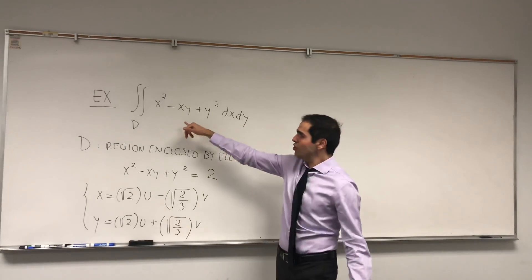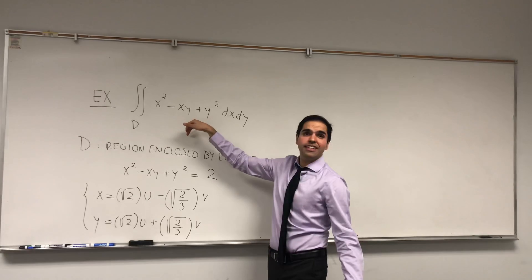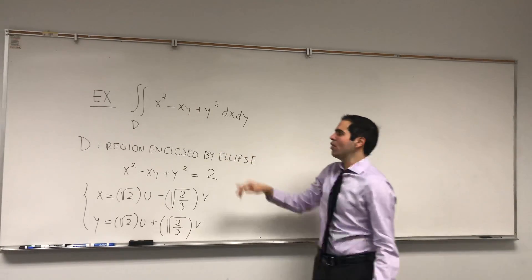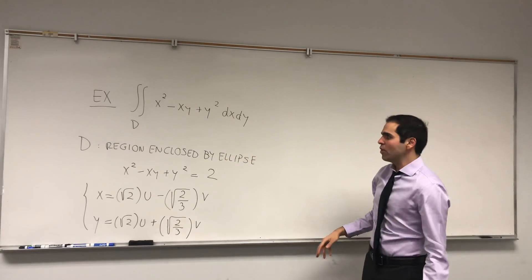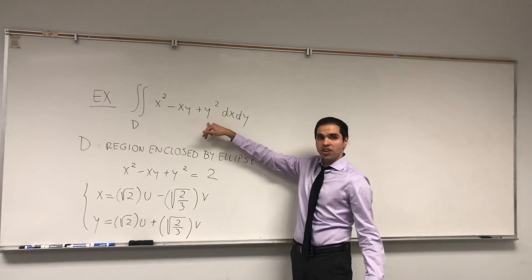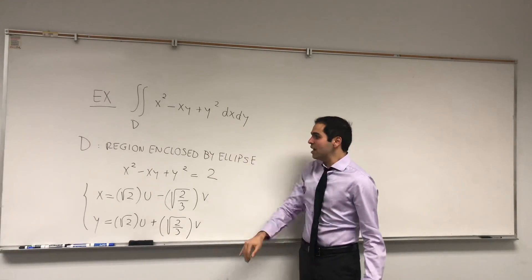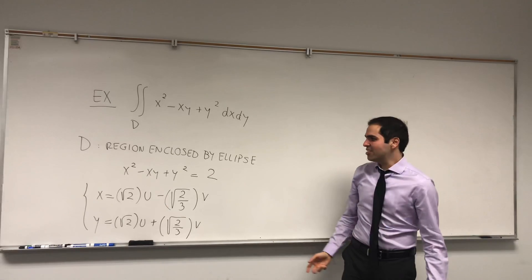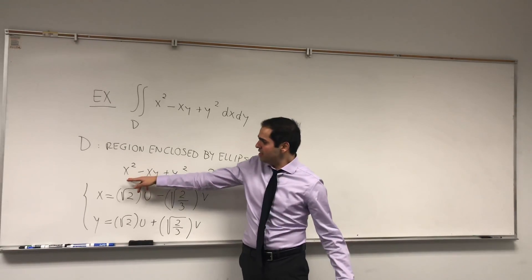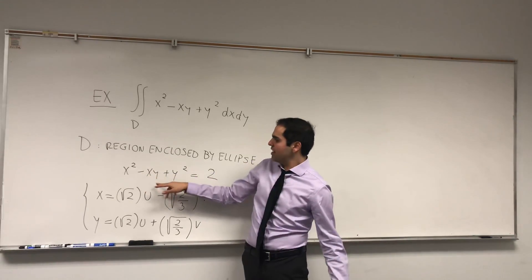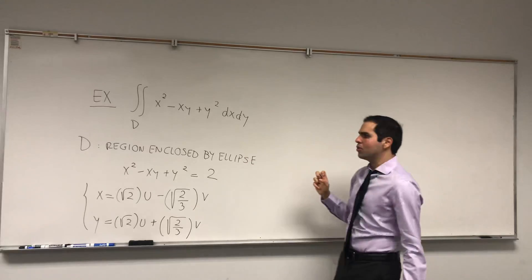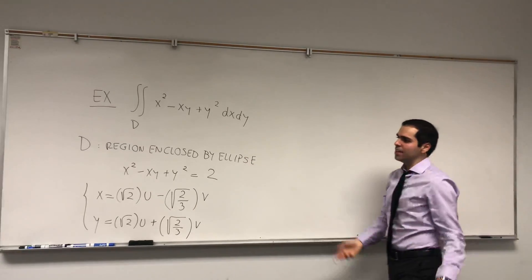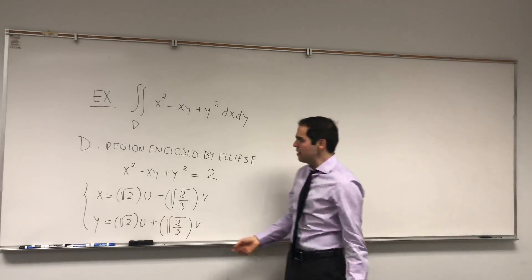Let's try to calculate this really weird integral: the integral of x² minus xy plus y², where not only the function is weird, but also the region itself is very strange. The region is x² minus xy plus y² equals 2, which basically becomes an ellipse.